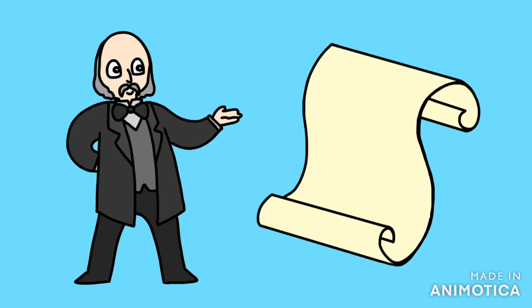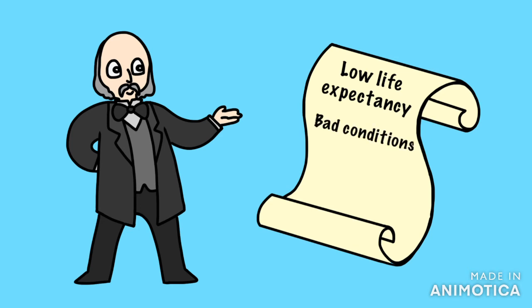Edwin Chadwick: In 1842, government official Edwin Chadwick completed a report on living conditions in British cities. He found life expectancy in cities was lower than in the countryside at 38 years; in Liverpool it was 15. The unhealthy living conditions – overcrowding, no sewage disposal, and poor diet – were causing poor health in the poor. The rotting sewage and filth was causing miasma, which made people ill. He recommended forcing local councils to build new sewer systems, remove waste, and supply clean water.